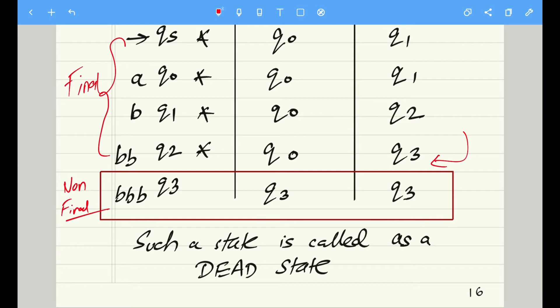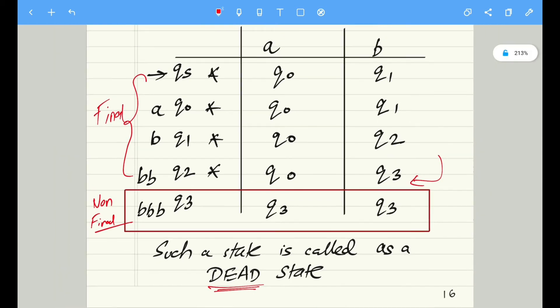And in this case, this particular state q3 is a non-final state, and hence it is called as a dead state. So the differentiating factor between a dead state and a trap state is that dead state is a non-final state, whereas a trap state is a final state. A very favorite question for all the examiners - they keep on asking this question.